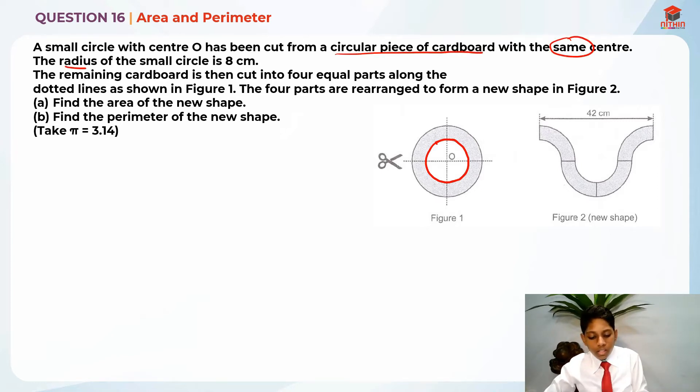The radius of the small circle is 8cm. So from here to here is actually 8cm. Next the remaining cardboard is then cut into four equal parts along the dotted lines. So the dotted line is basically this. These are the dotted lines over here.